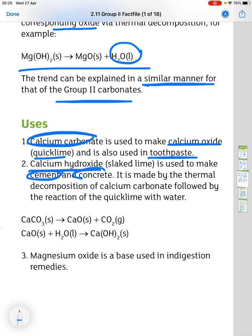Calcium hydroxide, or slaked lime, is used to make cement and concrete. And it's made by thermal decomposition of calcium carbonate, followed by the reaction of quicklime with water.